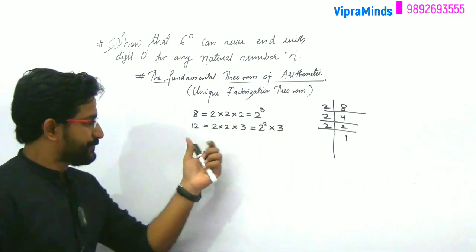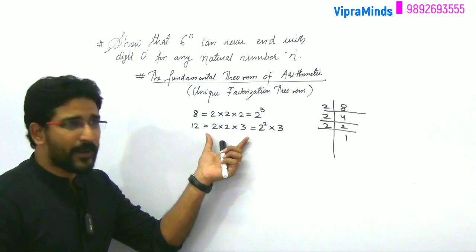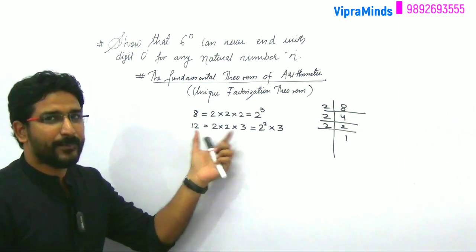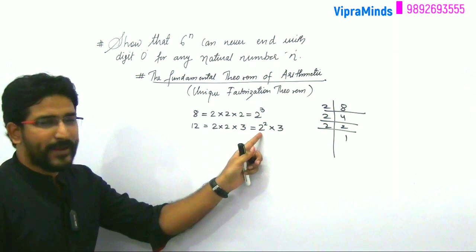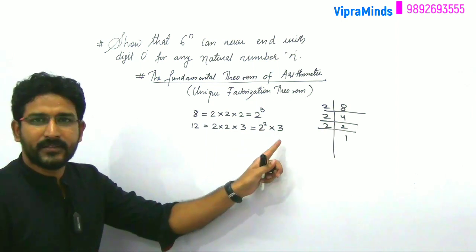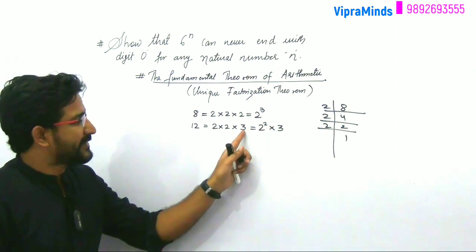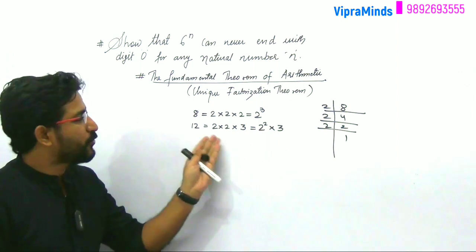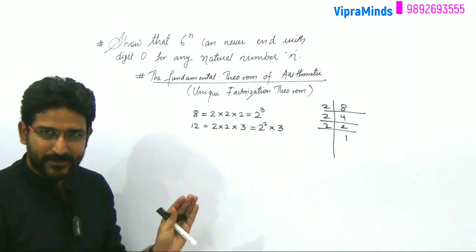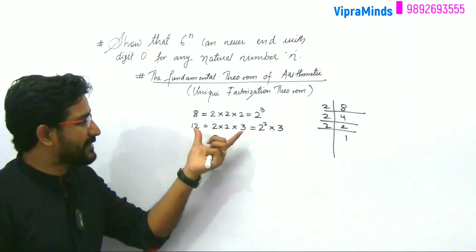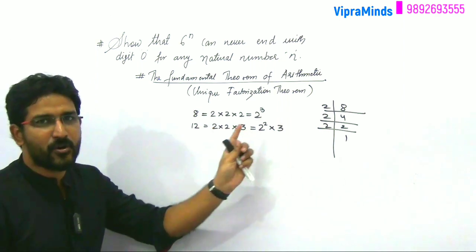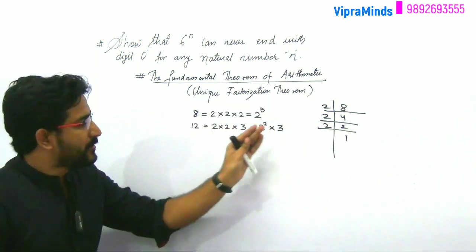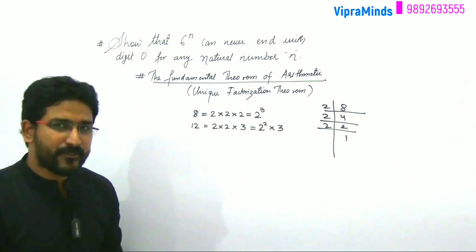So if we observe here, the prime factors of 12 are 2 and 3. Now 3 into 2 into 2 is 2 into 2 into 3 — that means the same thing. The prime factors are 2 and 3, where 2 appears to the power of 2 and 3 appears to the power of 1.